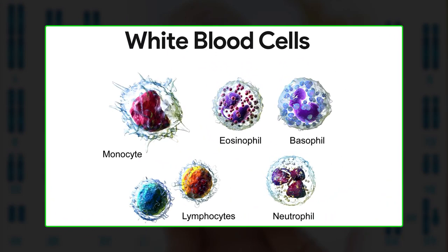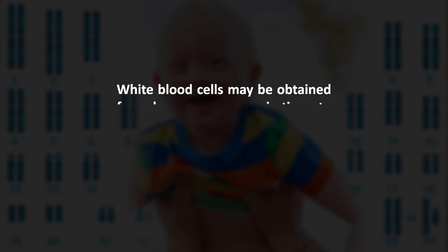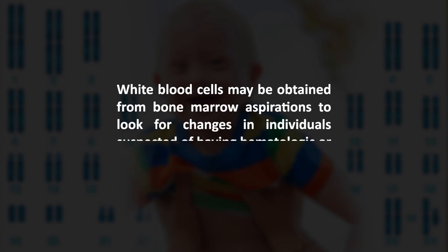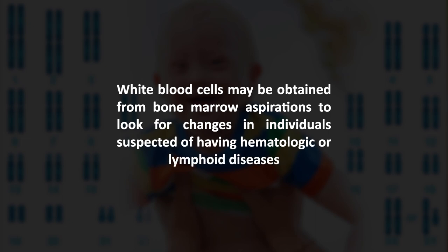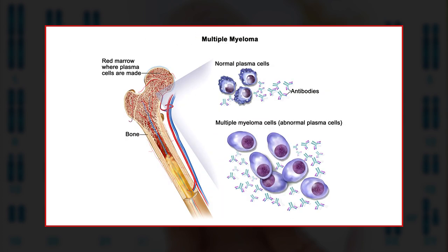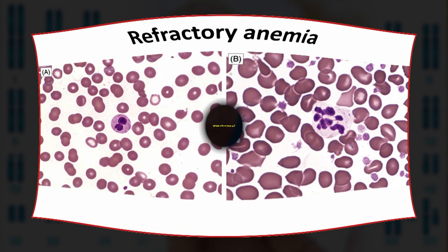Karyotyping requires experience and expertise to perform and interpret properly. In practice, it is usually performed on amniotic fluid to evaluate a fetus, and on lymphocytes — white blood cells from a blood sample — to test all other ages. Alternatively, white blood cells may be obtained from bone marrow aspirations to look for changes in individuals suspected of having hematological or lymphoid diseases like leukemia, lymphoma, myeloma, or refractory anemia.